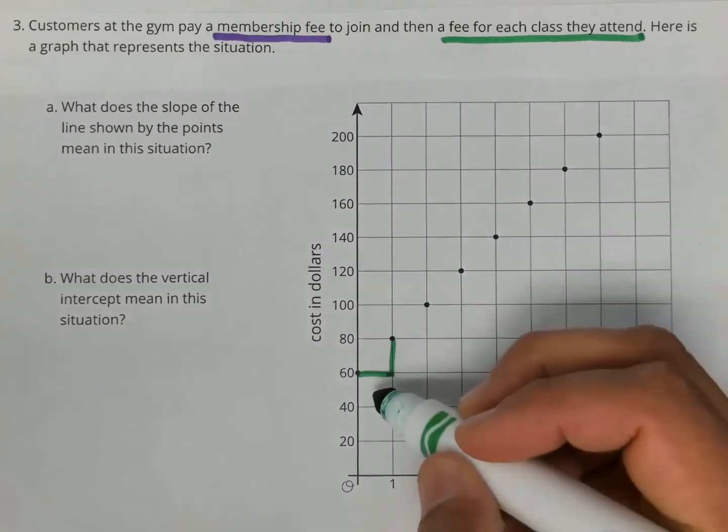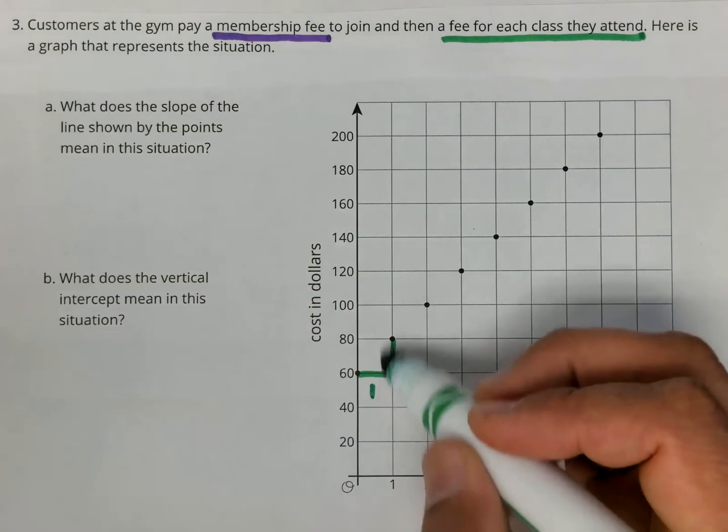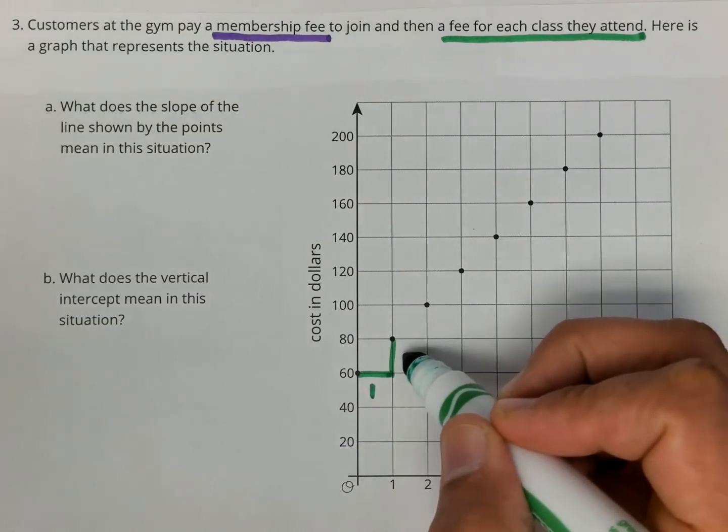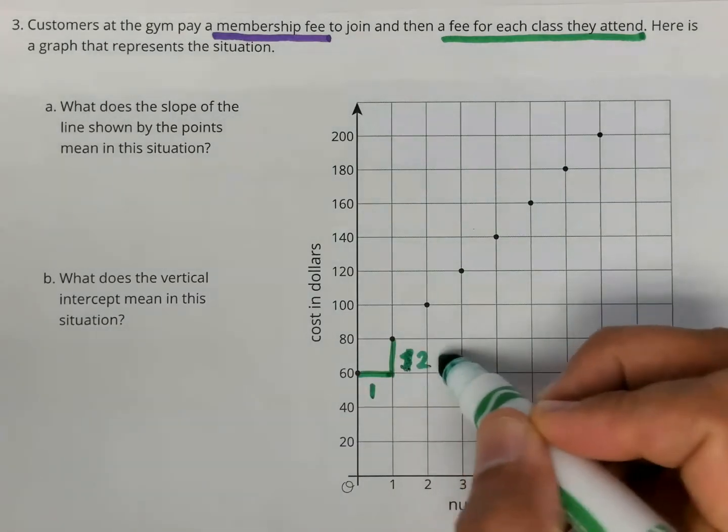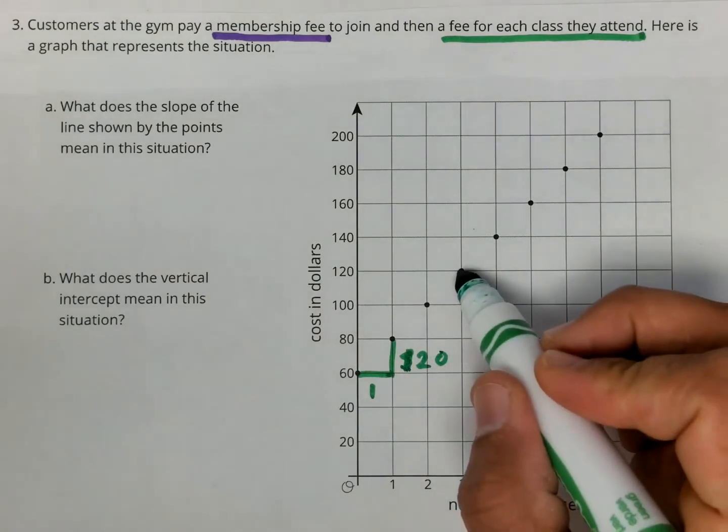So now right here, this is increasing by one class. How much does that increase by when you increase by a class? $20. I can draw another slope triangle somewhere here.